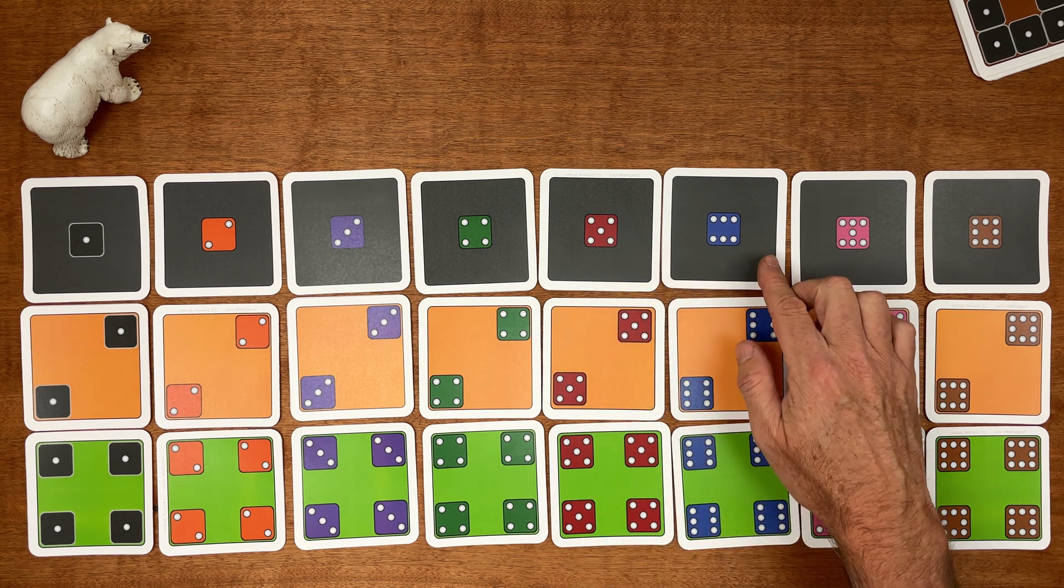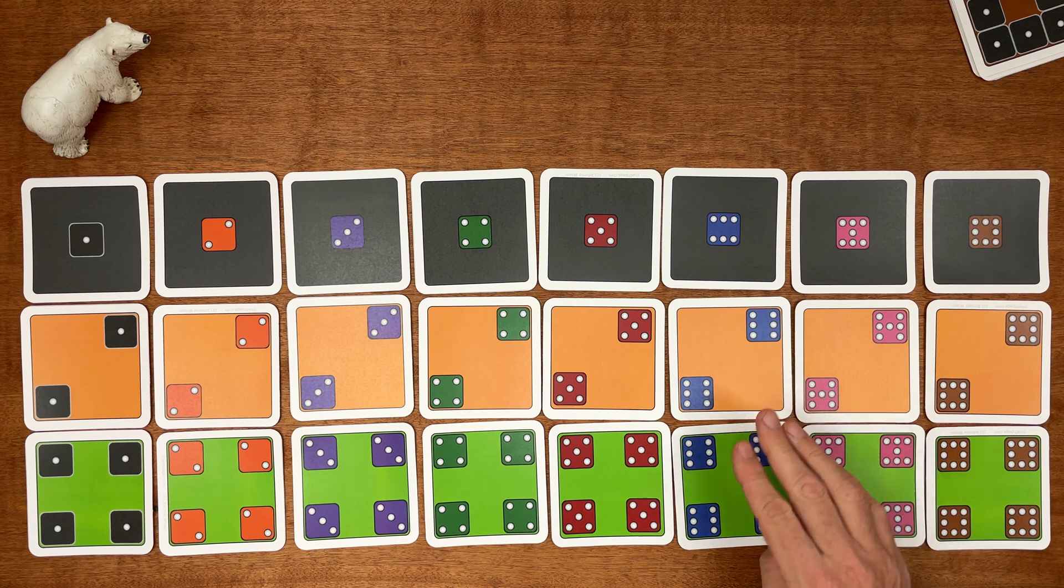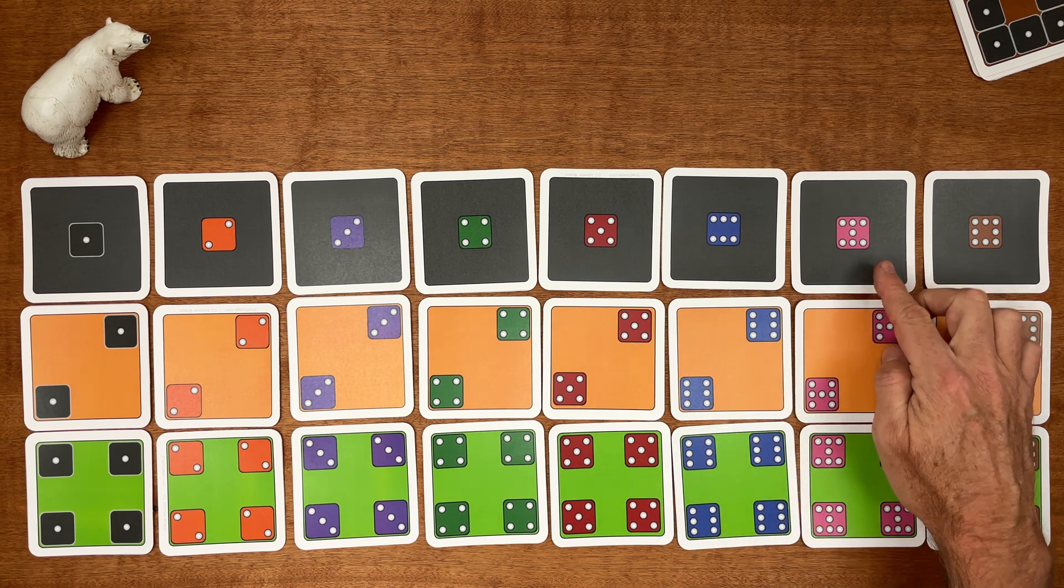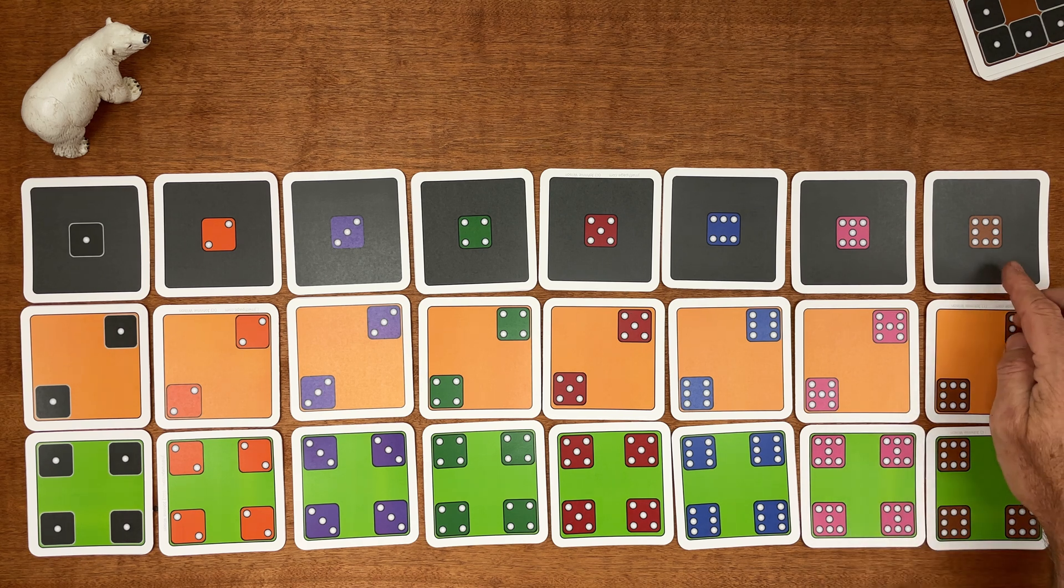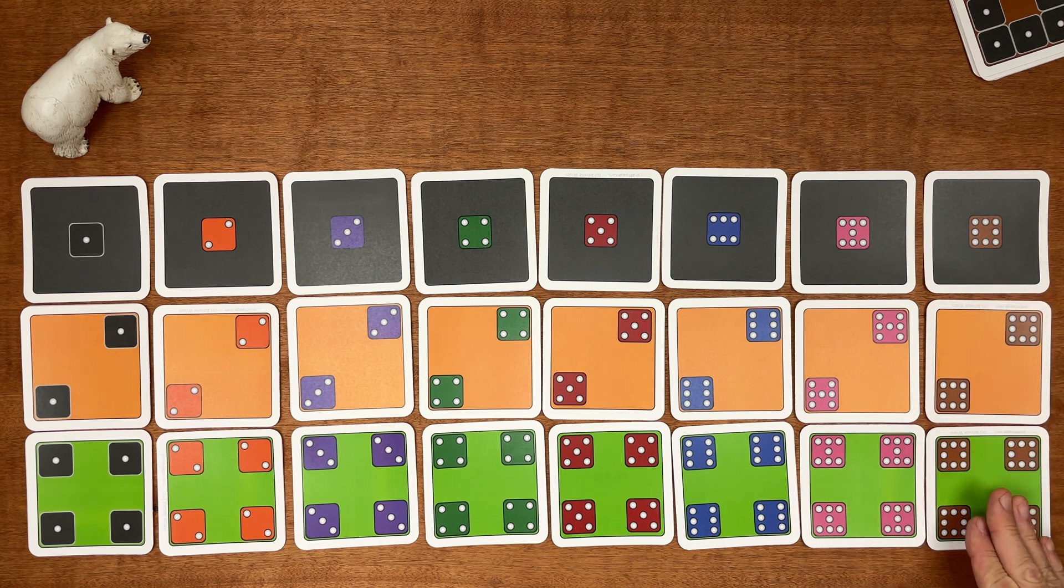One six, two sixes, four sixes. One seven, two sevens, four sevens. One eight, two eights, four eights.